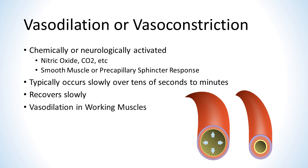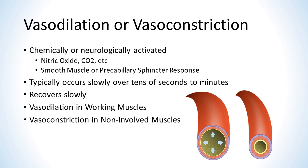Typical vasodilation is observed in working muscles, where the load causes a buildup of vasodilating substances. Typical vasoconstriction is observed in non-involved muscles when the central nervous system restricts blood flow to non-critical muscles in order to preserve blood flow for the brain, vital organs, and working muscles. Non-involved muscles are muscles that have minimal use in the type of exercise being performed.